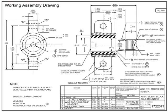Working assembly drawings show dimensions where required, as well as balloon identifiers to indicate each separate component part of the assembly. Working assembly drawings are ideal for smaller, simpler assemblies. Since they combine both detail and assembly characteristics, they can become complex very quickly.